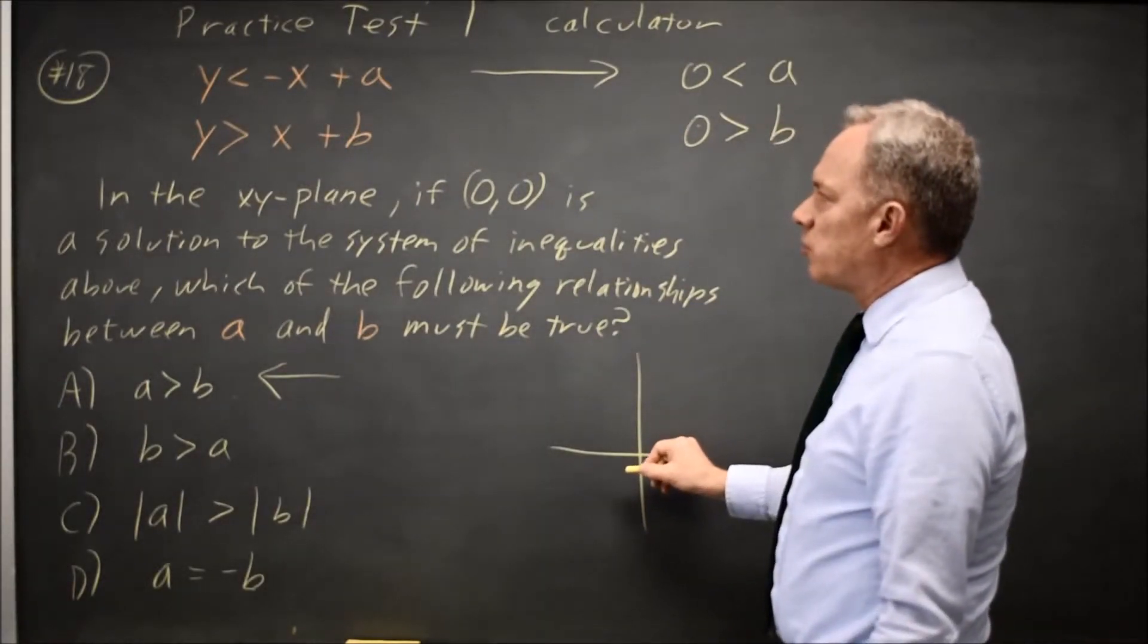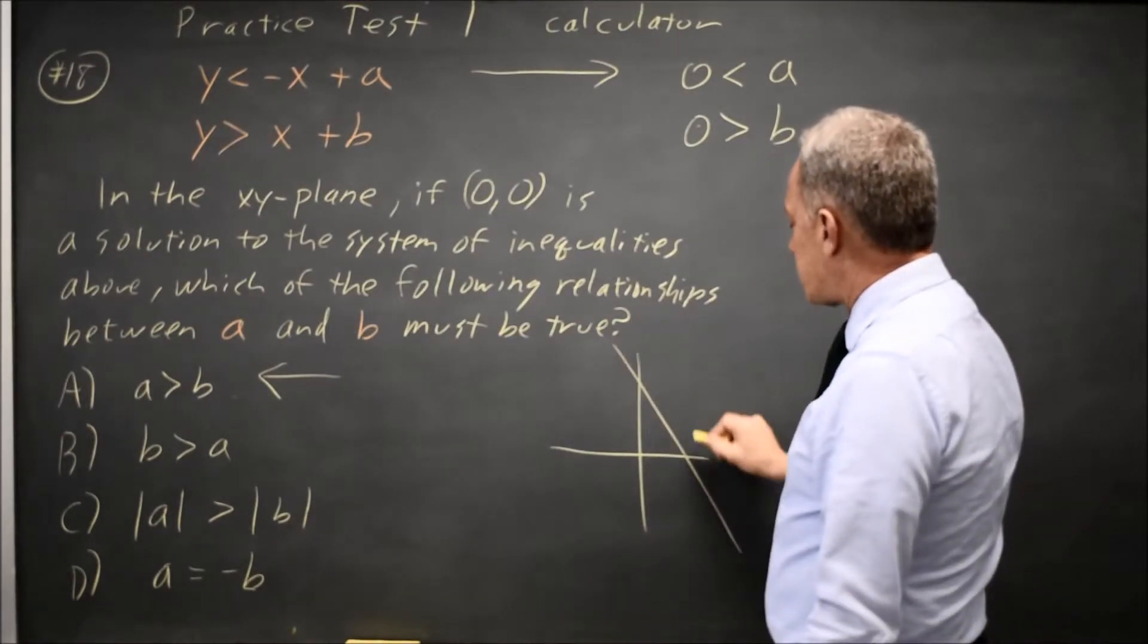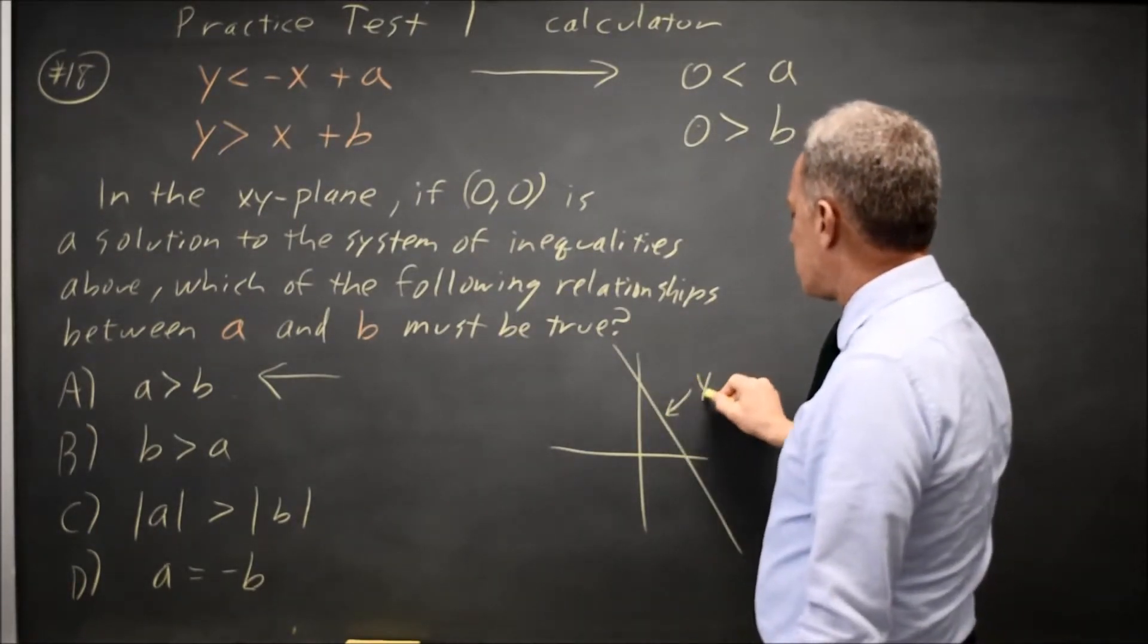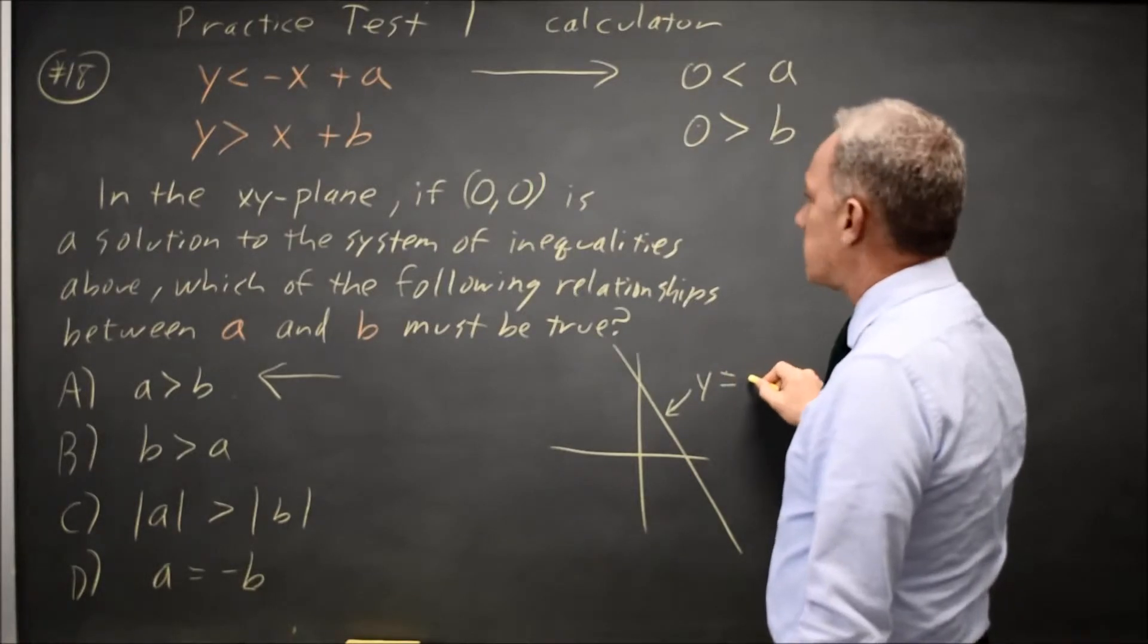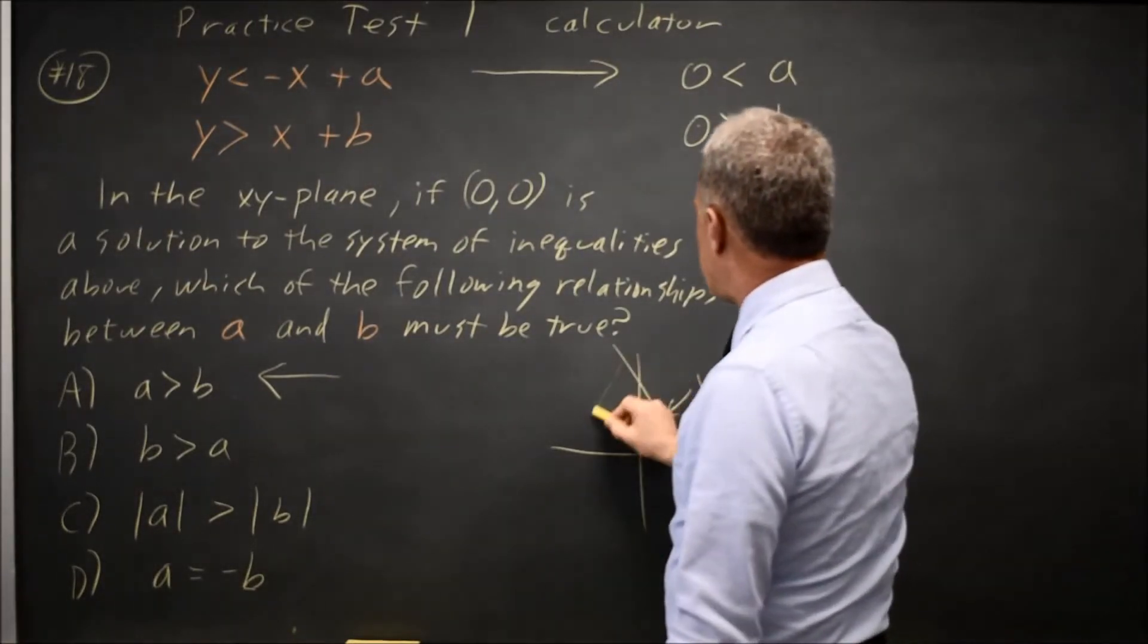If the origin is a solution for y less than negative x plus A, my inequality looks something like this. The equation is y equals negative x plus A, and I'm looking for the region below that.